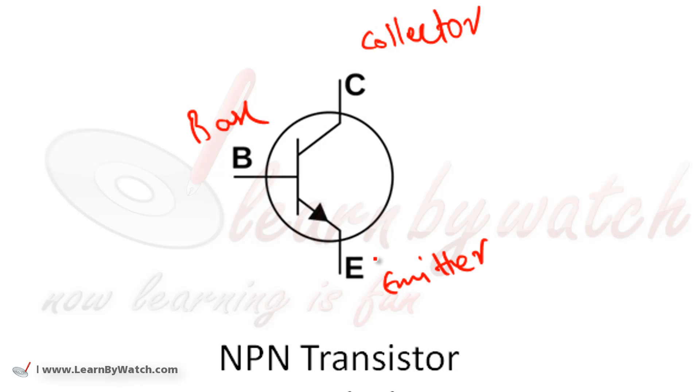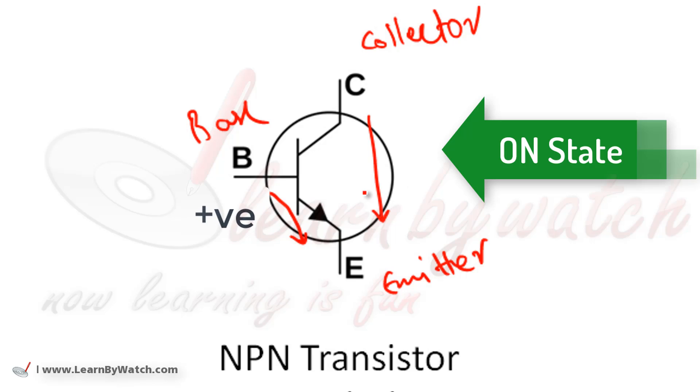So, let's see how it works. If the base is given a small positive voltage, then current starts flowing from base to emitter and also from collector to emitter. This state is called the ON state of the BJT.